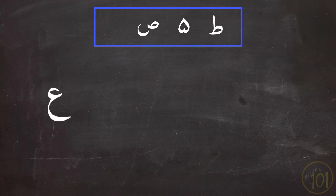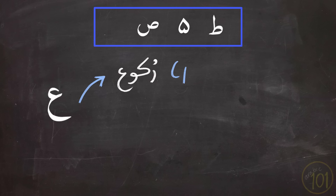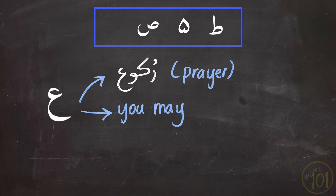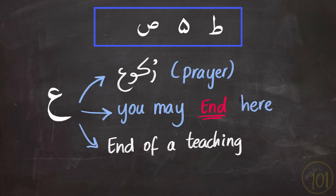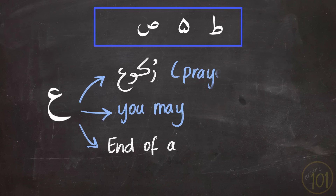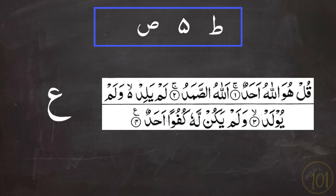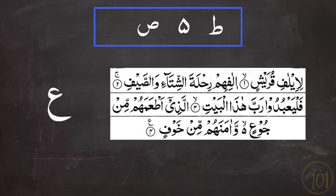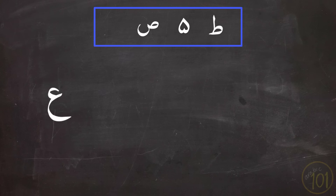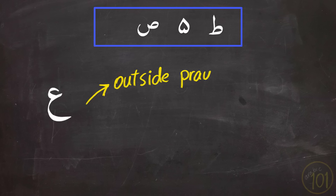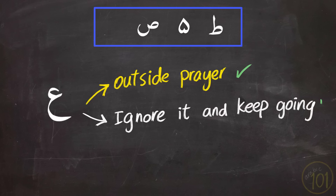Next is the symbol of Ain, which refers to the word ruku'. It is more relevant if you are in prayer, indicating a good spot to end your recitation and go to ruku'. That is because it marks the ending of a certain teaching or story of a prophet, making it a suitable place to stop. That's why shorter surahs end with this symbol. If you are outside prayer, it would also be a good spot to end your recitation if you were planning to discontinue — otherwise, you can ignore it and keep reciting.